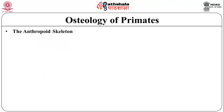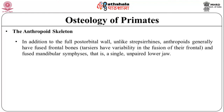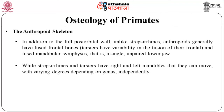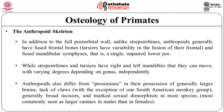Now let us discuss the Anthropoid skeleton. In addition to the full post-orbital wall, unlike Strepsirhini, anthropoids generally have fused frontal bones. Tarsiers have variability in the fusion of their frontal bones and a fused mandibular symphysis — that is, a single unpaired lower jaw — while Strepsirhini and tarsiers have right and left mandibles that can move independently to varying degrees. Anthropoids also differ from prosimians in their possession of generally larger brains, lack of claws (with the exception of one South American monkey group), generally broad incisors, and marked sexual dimorphism in most species, most commonly seen as larger canines in males than in females.